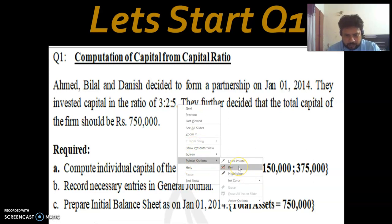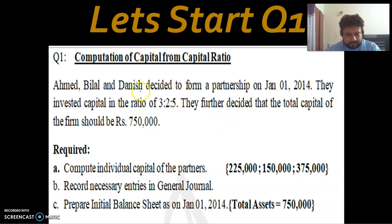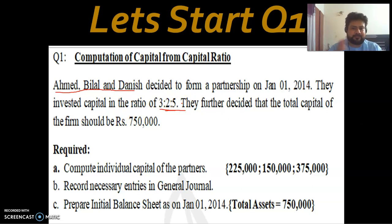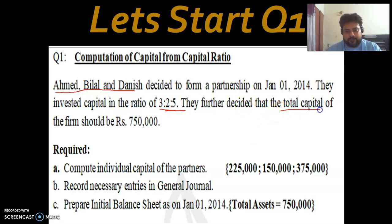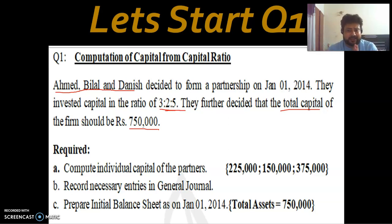Ahmed has 3 parts, Bilal has 2 parts, and Danish has 5 parts — making a total of 10 shares in the partnership. The partners decided that the total capital of the firm should be Rs. 7,50,000. This means 3 parts belong to Ahmed, 2 parts to Bilal, and 5 parts to Danish out of a total of 10.